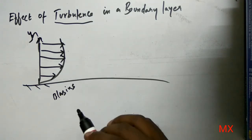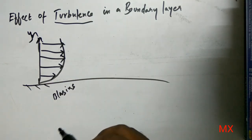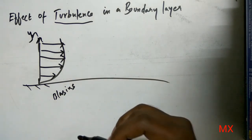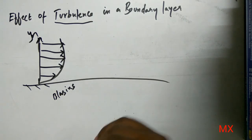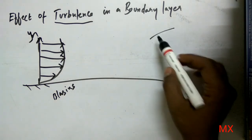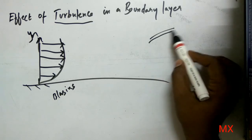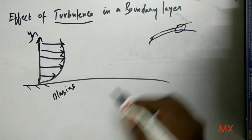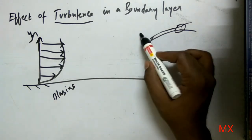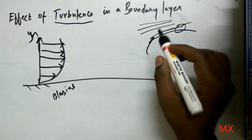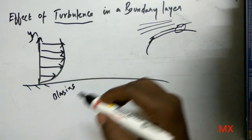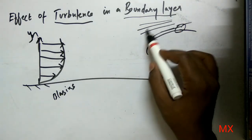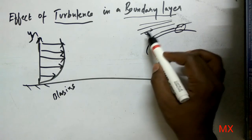When the boundary layer becomes turbulent — that is, the laminar boundary layer is becoming turbulent — the rate of momentum transfer from the free stream greatly increases. Consider the boundary layer in which the free stream is flowing. The area of suppression takes place here. The momentum transfer in this free stream is made to be increased.